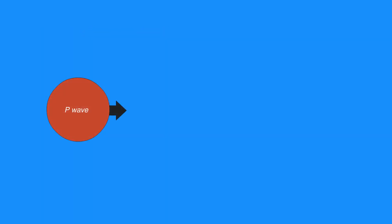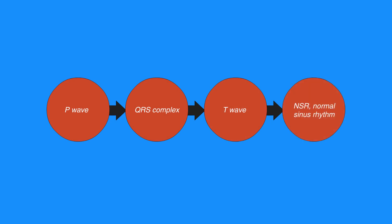The P wave, QRS complex, and T wave together at proper intervals are indicative of normal sinus rhythm, or NSR.